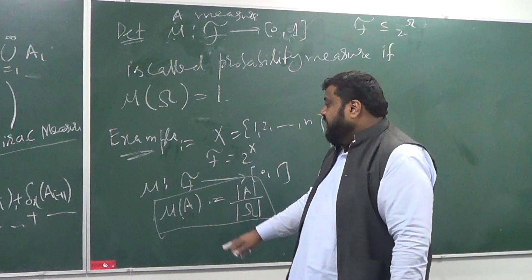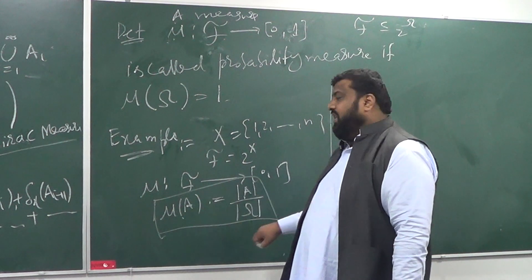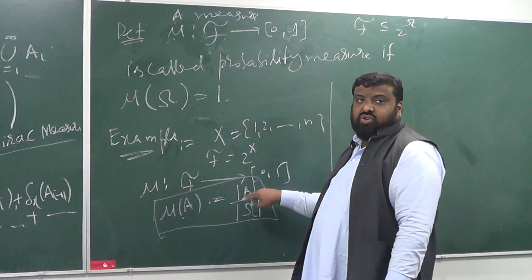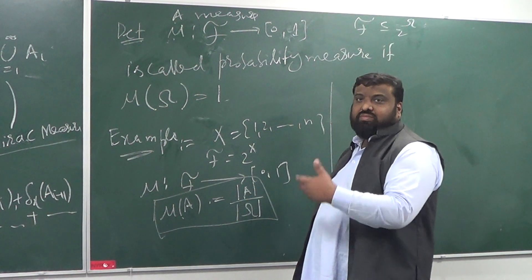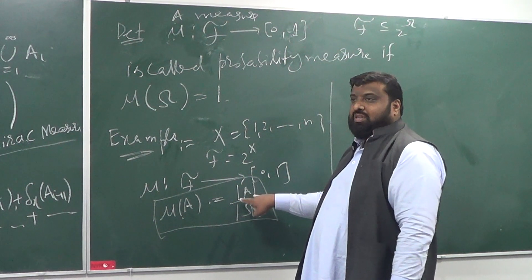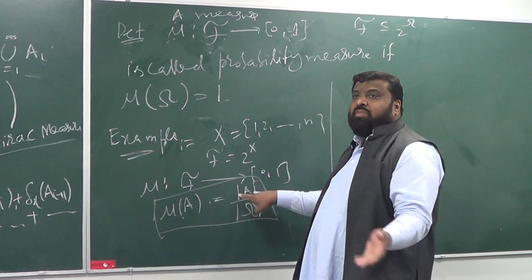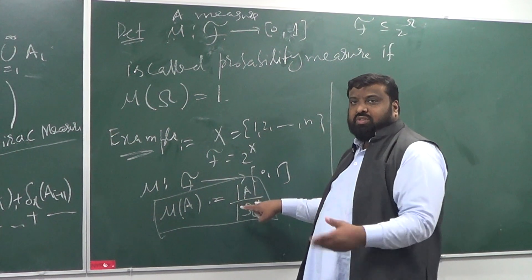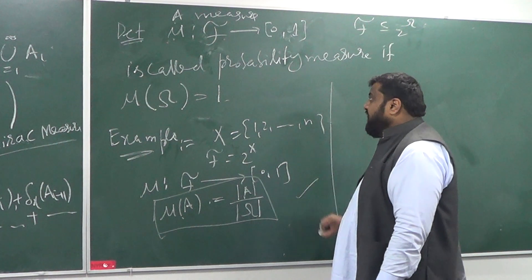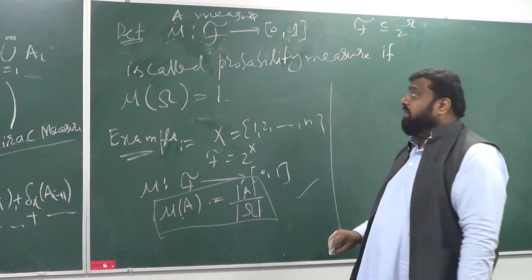And what happens if you put a union of AIs here? You're going to get order of union of AIs. But we know that since all these sets are disjoint, so the order of their union is going to be the sum of the orders. So, you can verify that this is also a measure, not only a measure, but it's a probability measure.